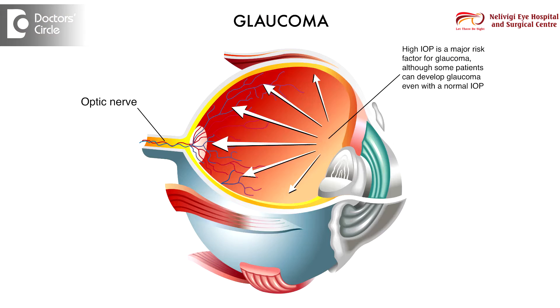In addition to this, the classification of glaucoma can also be based on the causes. For example, when there is a trauma which causes glaucoma, we call it traumatic glaucoma. When glaucoma comes from childhood, we call it juvenile glaucoma. When it occurs from birth, we call it congenital glaucoma. We can also have glaucoma due to steroids, which we call steroid-induced glaucoma.